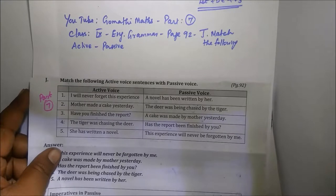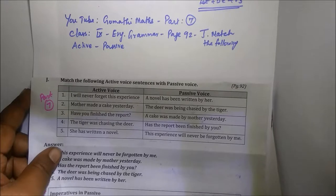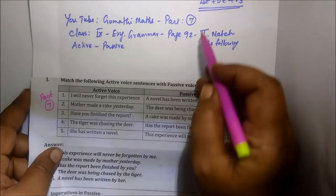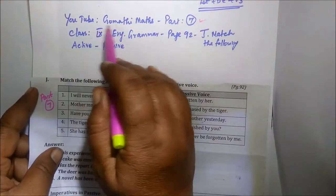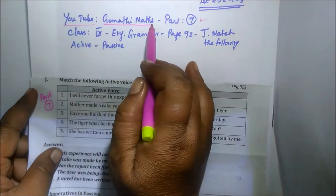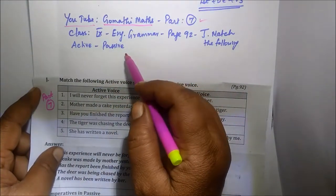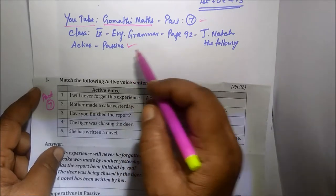Good morning students. We will see Part 7 of 9th standard English grammar. This video is going to be on YouTube Maths. Now we will see active voice to passive voice.